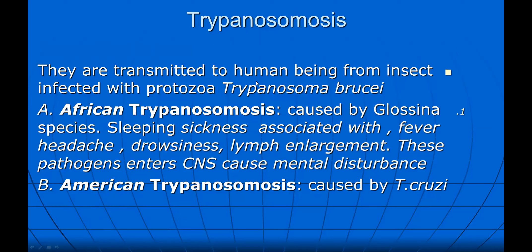Trypanosomiasis is transmitted to humans from insects infected by the protozoa Trypanosoma. Types include African trypanosomiasis caused by Trypanosoma species leading to sleeping sickness, associated with fever, headache, drowsiness and mental disturbance. American trypanosomiasis is caused by Trypanosoma cruzi.